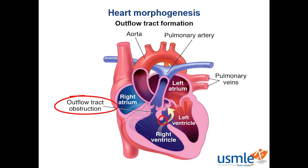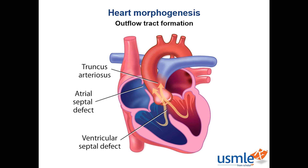The third thing that can go wrong with the aorticopulmonary septum is complete failure of the septum to form within the truncus arteriosus. This would create one large truncus arteriosus draining both the right and the left ventricle, where both outflow tracts go into one common trunk. This is commonly associated with an accompanying VSD.